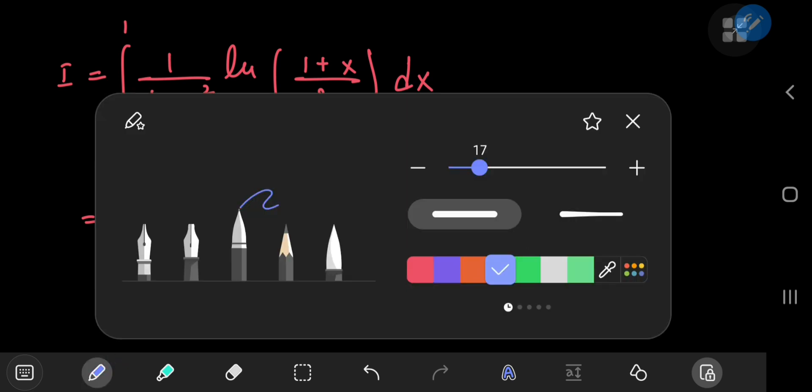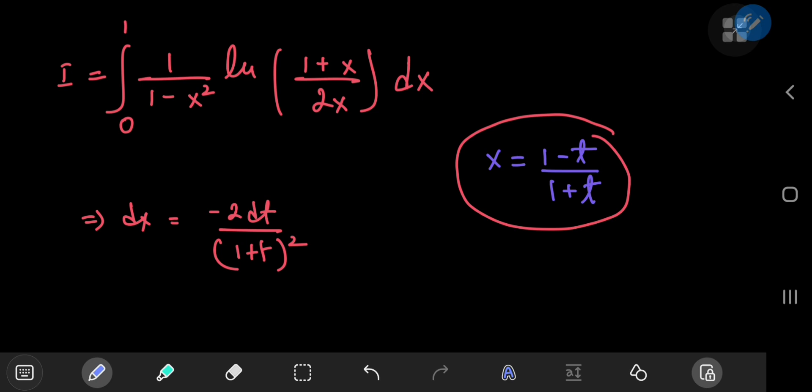And it does a good job of manipulating the other rational expressions in x like this 1 by 1 minus x squared. So 1 by 1 minus x squared equals 1 by 1 minus t by 1 plus t squared,